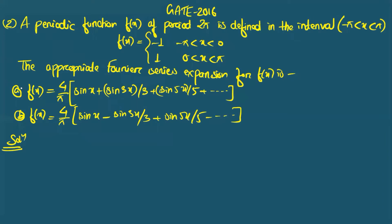The next question: a periodic function fx of period 2π is defined in the interval −π < x < π. fx equals −1 for −5 < x < 0 and equals +1 for 0 < x < 5. We need to find the appropriate Fourier series expansion. Looking at the function, it is an odd function — if you take f(−x) it becomes the negative of fx.